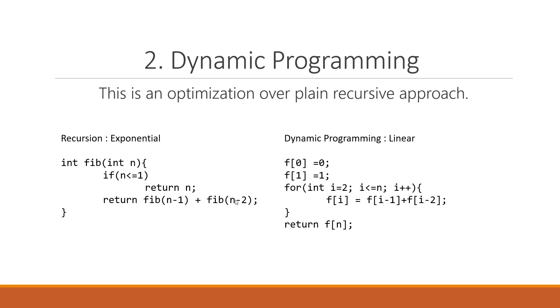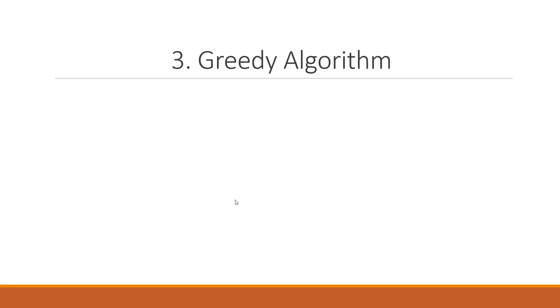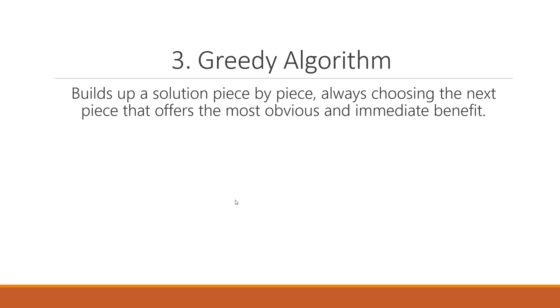The third one is greedy algorithm. In greedy algorithm, we build up a solution piece by piece, always choosing the next piece that offers the most obvious and immediate benefit. We always make a choice that seems to be best at that moment. The problems where choosing locally optimal also leads to global solution are the best fit for greedy method. As an example, you can think of fractional knapsack problem where we use greedy method to solve it.